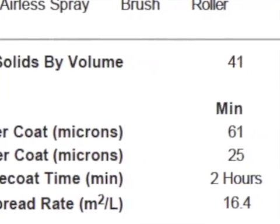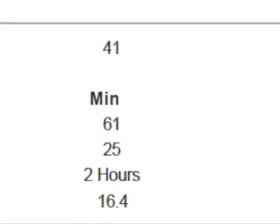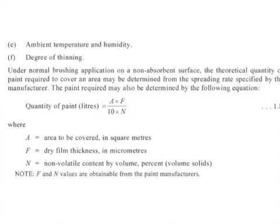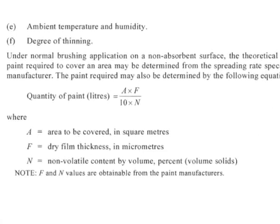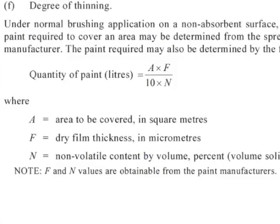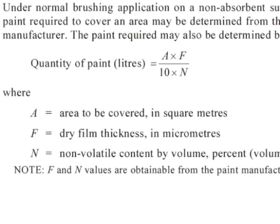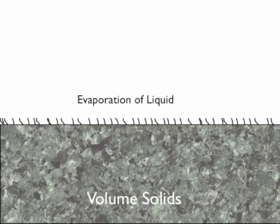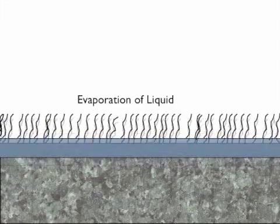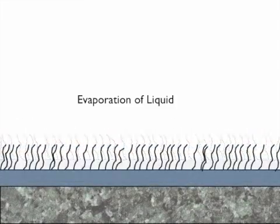Manufacturers will specify the spread rate, and they do this by using a theoretical quantity calculation. The quantity calculation is basically a calculation of an area to be covered multiplied by the dry film thickness. The dry film thickness is the part of the paint that remains after the thinners has evaporated.